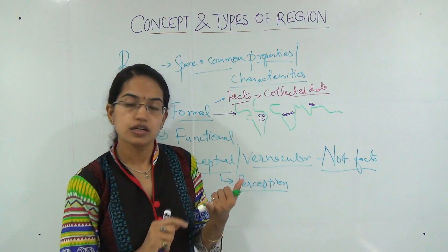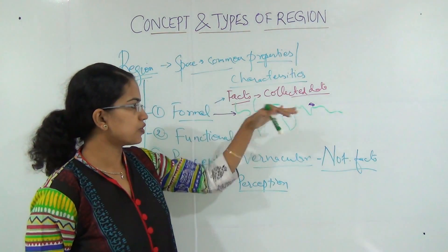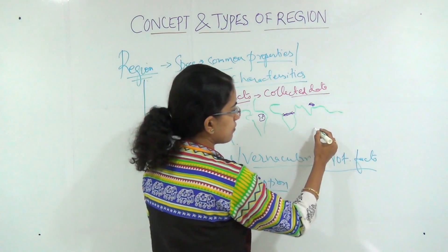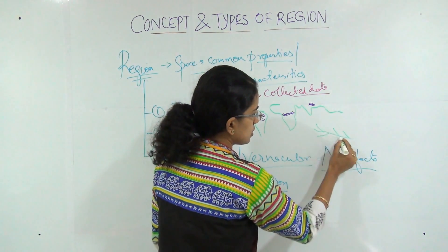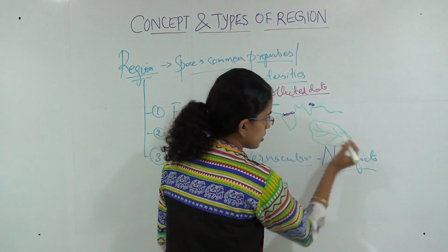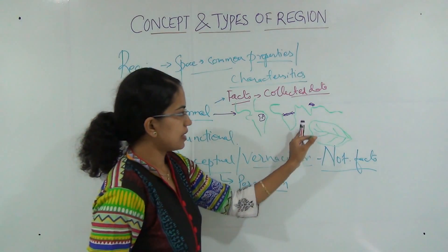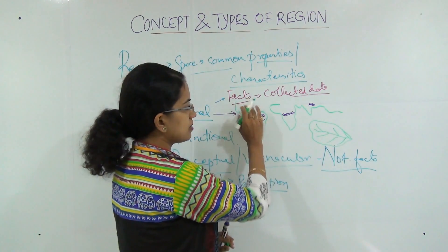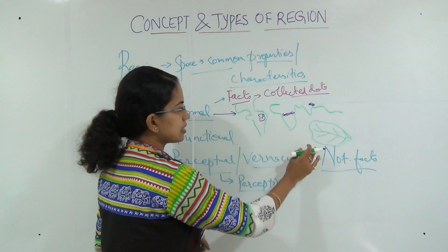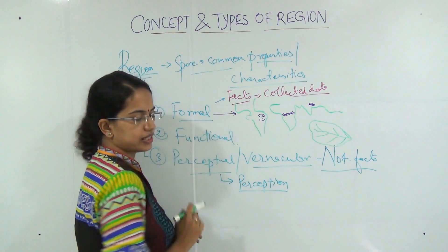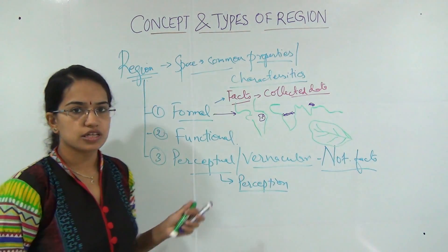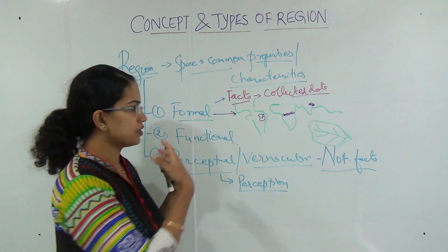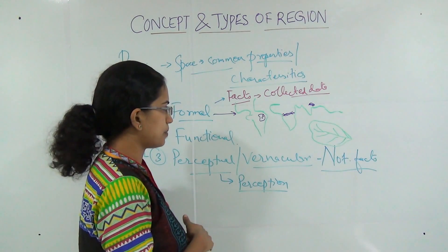Formal regions can be based on physical features. For example, if I draw a river and all its tributaries, the complete area would be under the river basin. I can evaluate that this is the river basin of the Ganga river — I am defining this based on facts and therefore this Ganga river basin is a formal region. Similarly, I can have regions based on economic activities, language, culture, human-environmental interactions, and other parameters.